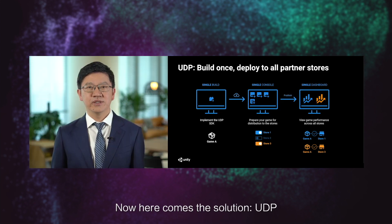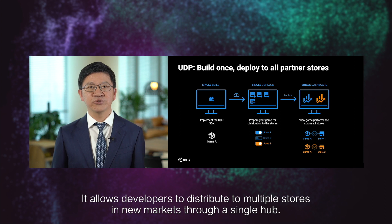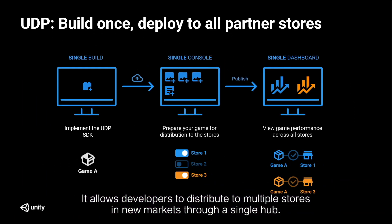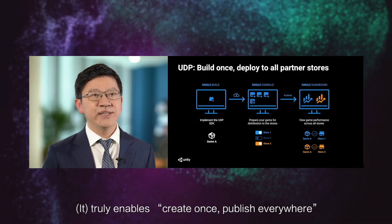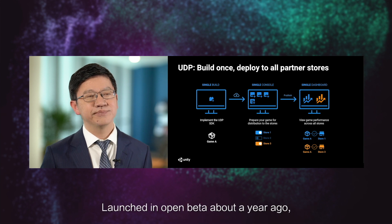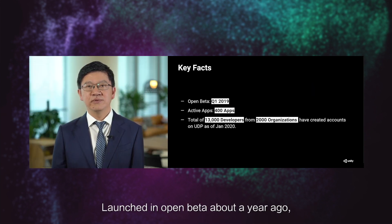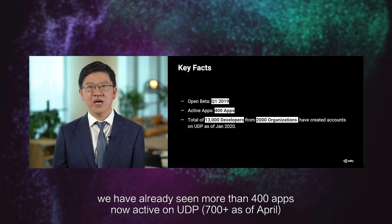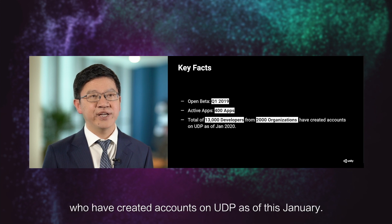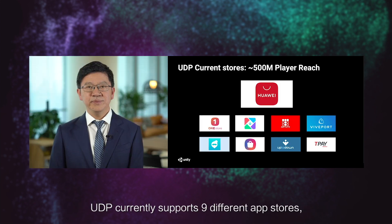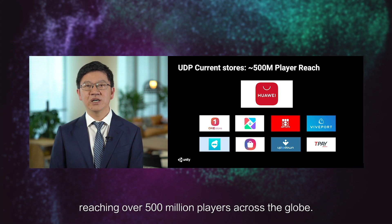Now, here comes the solution: UDP. It allows developers to distribute to multiple stores in new markets through a single hub. So developers can distribute their new games on Huawei App Gallery or many other platforms more easily — truly enabling 'create once, publish everywhere.' Launched in Open Beta about a year ago, we have already seen more than 400 apps now active on UDP. There are a total of 13,000 developers from 2,000 organizations who have created accounts on UDP as of this January. UDP currently supports nine different app stores, reaching over 500 million players across the globe.